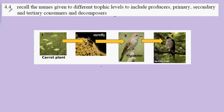GCSE biology syllabus statement 4.1: we're looking at the different trophic levels. The word trophic means to feed, so we're looking at the names given to the different feeding levels.